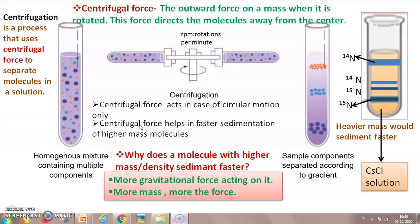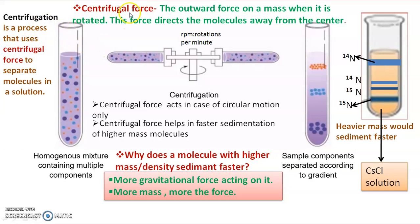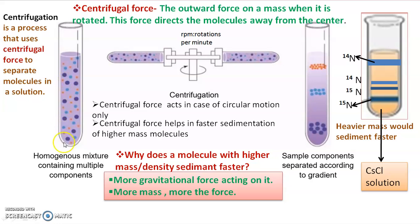Centrifugation is a process of separating molecules in a solution based on centrifugal force — the force exerted on a mass when it is rotated. A centrifuge with a rotor spins at a set RPM that varies per experiment. Molecules of different sizes and densities — such as DNA, RNA, and proteins — separate into various layers forming a gradient. Meselson and Stahl specifically used cesium chloride salts in solution for their density gradient centrifugation.